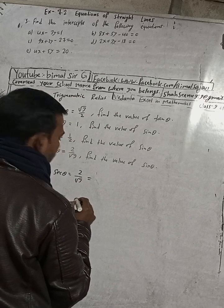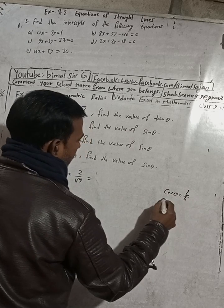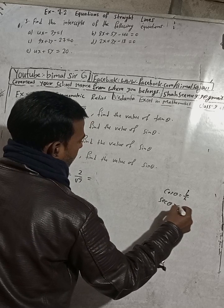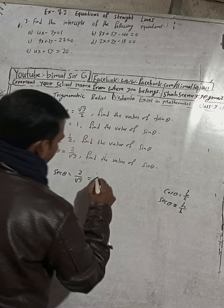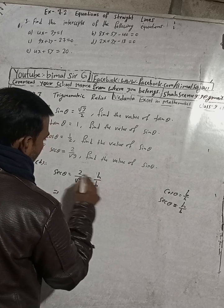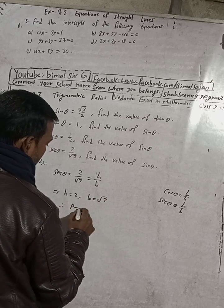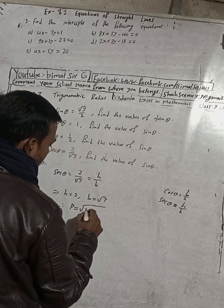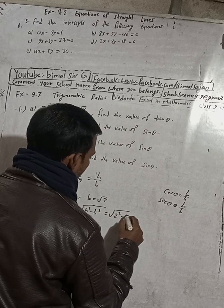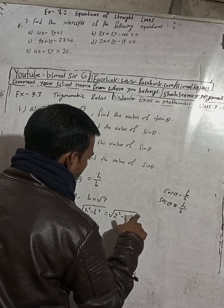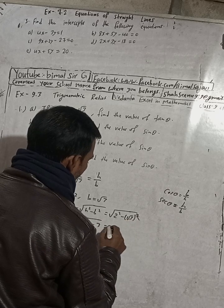Since cos θ equals B by H, sec θ equals H by B. So this implies H is equal to 2 and B is equal to √3. Now H and B are known and we need to find P. P equals root under H squared minus B squared, which is root under 2 squared minus (√3) squared, equal to root under 4 minus 3, which gives root 1 equals 1.